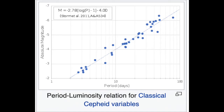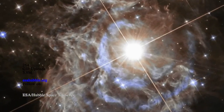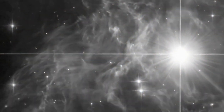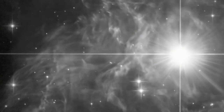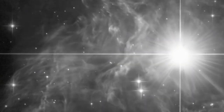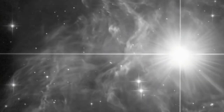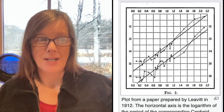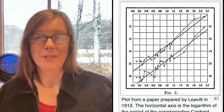A wonderful relationship was revealed. She found that the brighter the Cepheid variable, the longer the period. A variable star that cycled in just a day was much less luminous than a star that took over a month to complete its cycle. She published a paper on the first standard candle using the period-luminosity relationship.